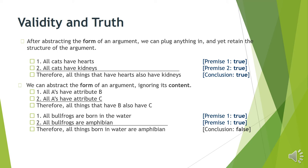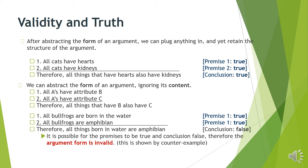You can have the premises both be true and the conclusion false. Since all these arguments have the same structure, if one of them has true premises and a false conclusion, then the structure is the problem. If the structure is the problem, any argument plugged into that same structure — whether about cats, bullfrogs, or triangles — will also have a bad structure. If the conclusion happens to be true, it's only by accident. The argument form is invalid, and I've shown this by coming up with a counterexample.